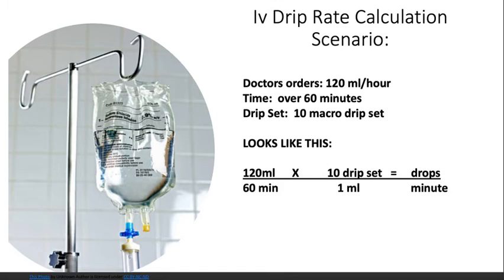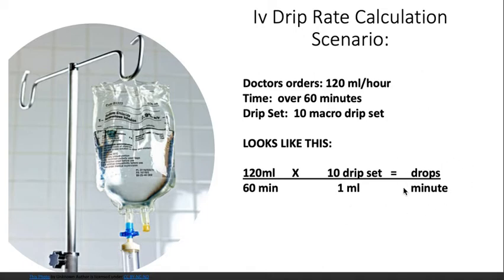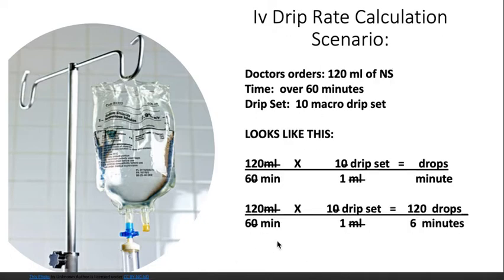Let's go over a scenario. The doctor orders 120 milliliters of normal saline over an hour, and we have a 10 macro drip set available. On the left side of the equation we put the doctor's order: volume in milliliters over time in minutes. We then multiply this by our drip set — the macro 10 drip set — meaning it takes 10 drips to form one milliliter of fluid. This will give us our answer in drops per minute.